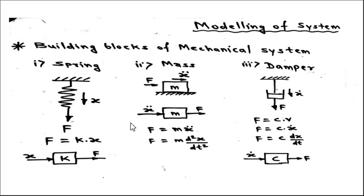To determine how a system behaves with respect to time when subjected to a disturbance or input, mathematical models are required. These models are equations describing the relationship between input and output. Systems are made up of building blocks, each with a single property. For example, a mechanical system has three major building blocks: spring, mass, and damper — with properties of stiffness, inertia, and damping respectively. Similarly, electrical systems have resistor, capacitor, and inductor as basic building blocks.